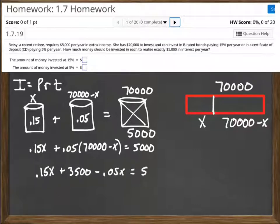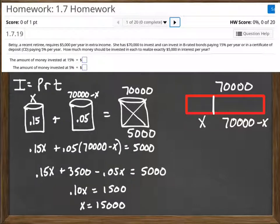I'm going to go through it pretty quickly now because that's the easy part. So we multiply through. We then have some like terms there with the 0.15X and the 0.05X, giving us 0.10X. And I bring the 3,500 to the other side equals 1,500. Divide by 0.10, that's where I get 15,000.